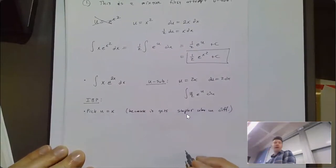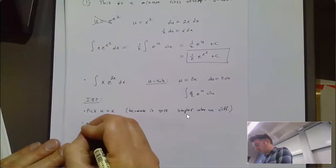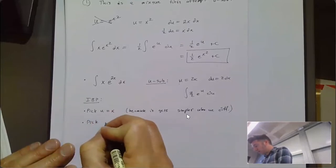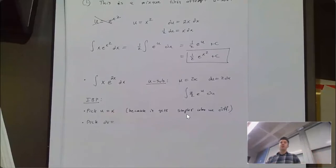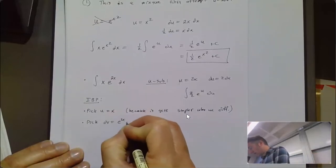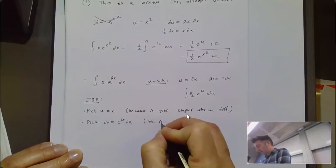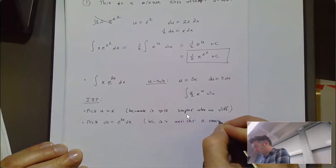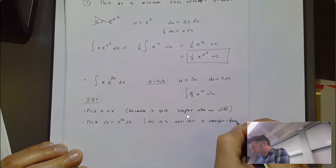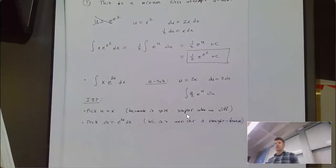We also pick dv, which should always be the rest. But dv should be something that when you anti-differentiate it, it's relatively easy. We pick dv to be e^(2x) dx because its anti-derivative is relatively easy. So: u gets simpler when differentiated, dv is the rest that's not terrible to anti-differentiate, and then we put it into the formula.